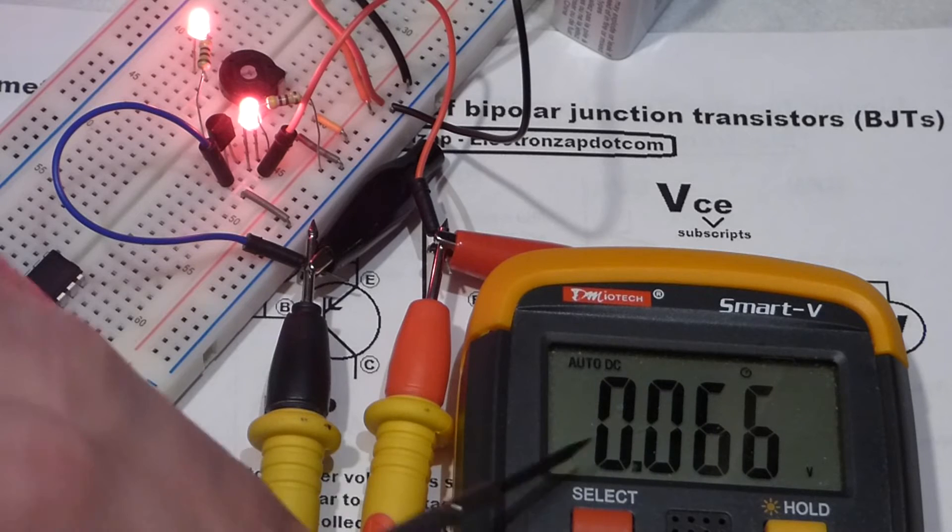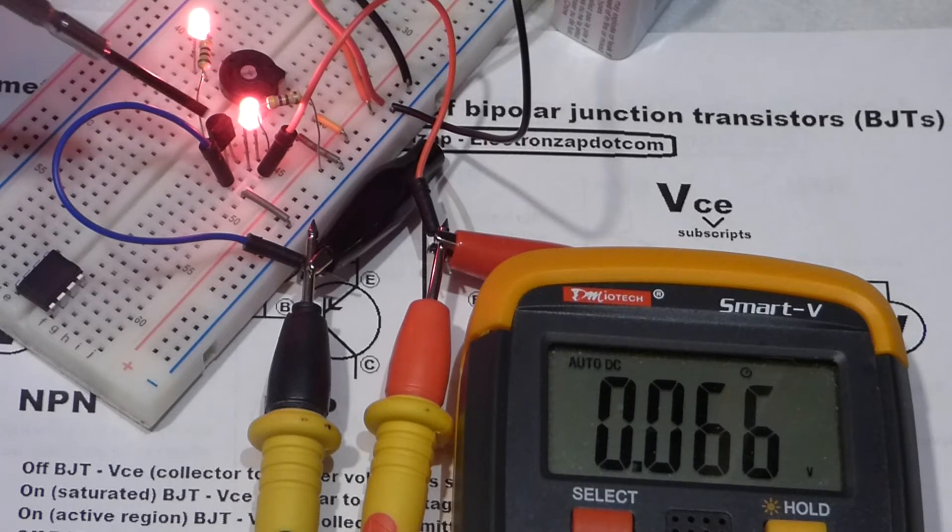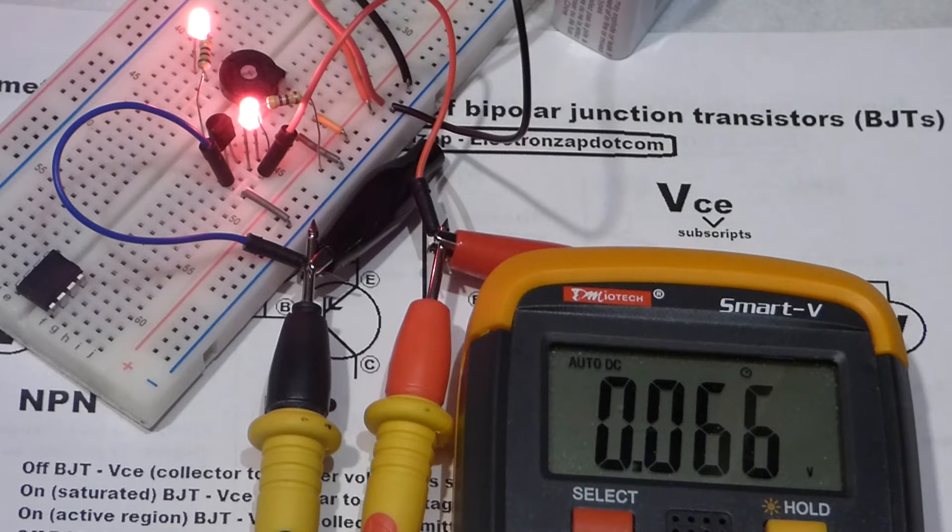So none of the current, hardly any of the current, is running through the meter. So the meter doesn't detect any voltage. So the transistor acts kind of like a variable resistor, depending on how much current makes it to the base.